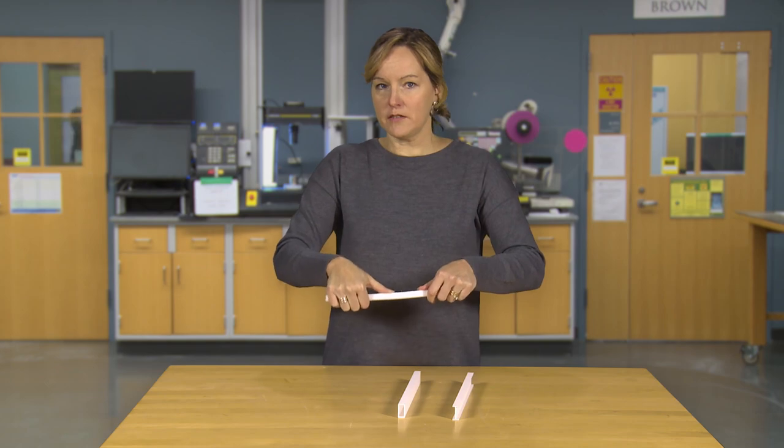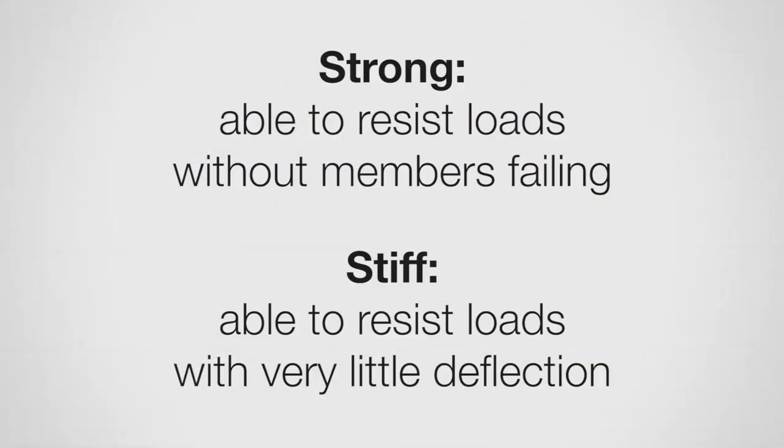Just a note on stiffness and strength. Lots of people use those interchangeably. Stiffness is a measure of how much it's going to deflect. As I try to bend this, one of them is going to deflect more than the other. The one that deflects the least is referred to as a stiffer beam.